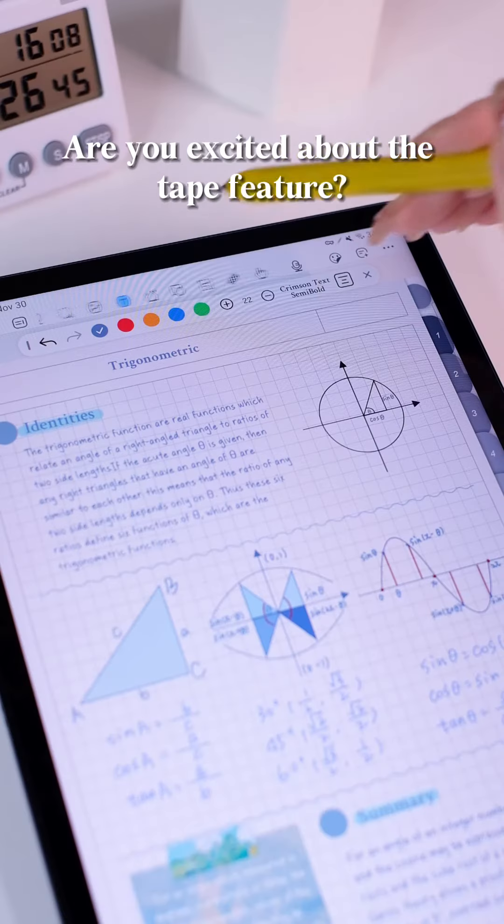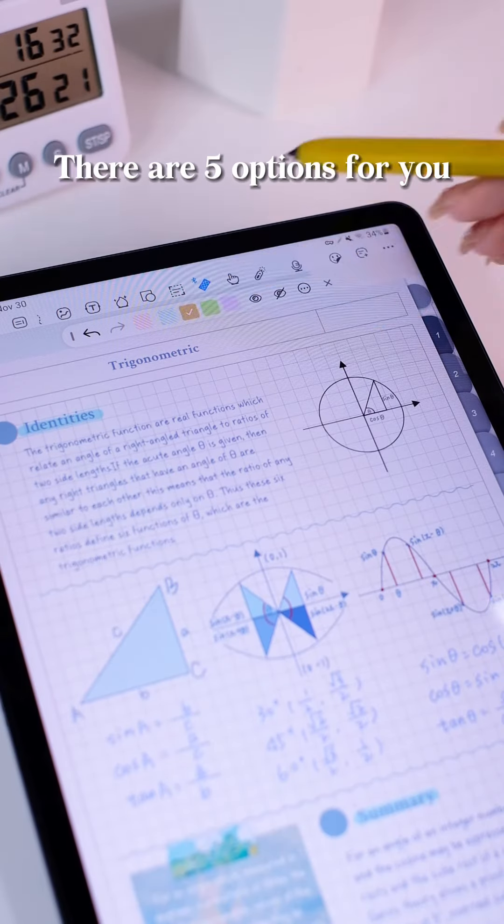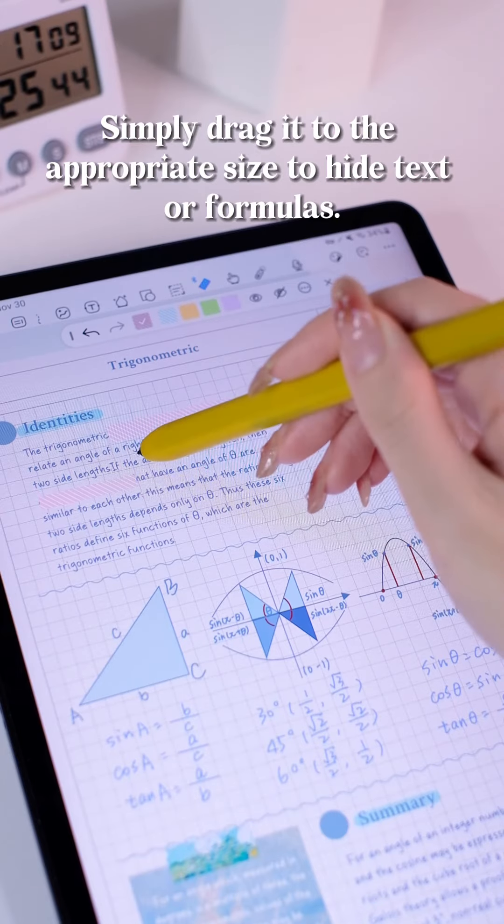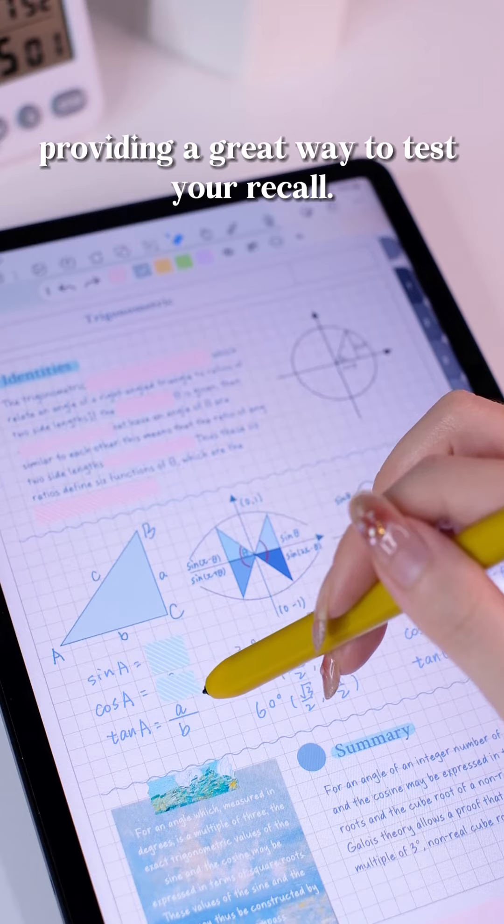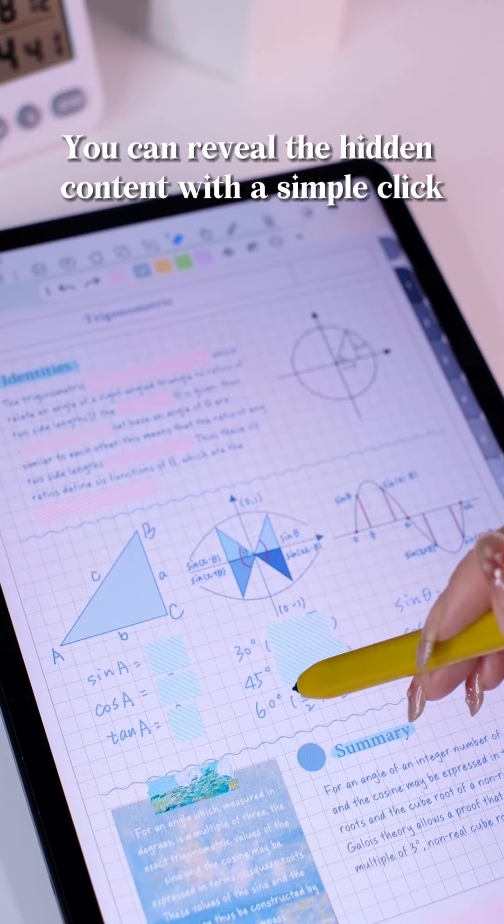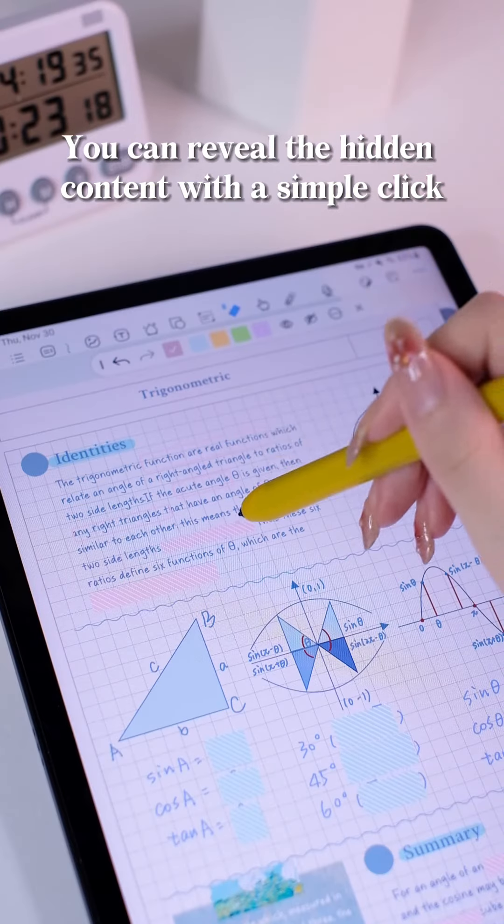Are you excited about the tape feature? There are five options for you. Simply drag it to the appropriate size to hide text or formulas, providing a great way to test your recall. You can reveal the hidden content with a simple click.